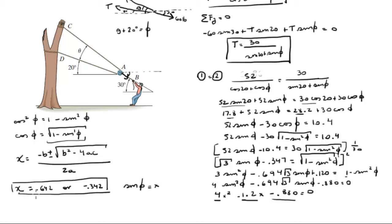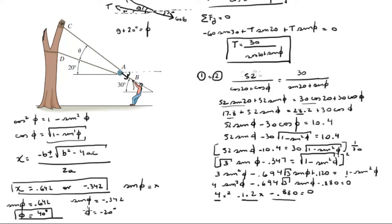Replacing x with sine of phi: sine of phi equals 0.642 gives phi equals 40 degrees, and sine of phi equals negative 0.342 gives phi equals negative 20 degrees. We keep phi equals 40 degrees and discard the negative solution, because a negative 20-degree angle would place the cable in the wrong direction.